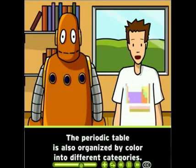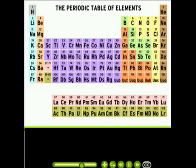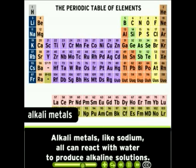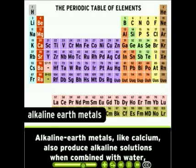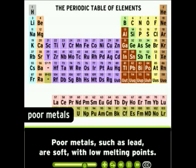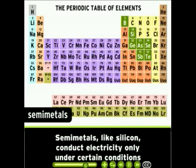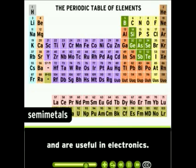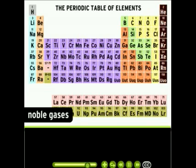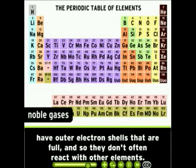The periodic table is also organized by color into different categories based on properties of the elements. Alkali metals, like sodium, can react with water to produce alkaline solutions. Alkaline earth metals, like calcium, also produce alkaline solutions when combined with water and are found all over the place on Earth. Transition metals, like iron, are strong and shiny. Poor metals, such as lead, are soft with low melting points. Semi-metals, like silicon, conduct electricity only under certain conditions and are useful in electronics. Non-metals have a variety of properties and include the carbon, nitrogen, and oxygen vital to life on Earth. Noble gases, like helium and neon, have outer electron shells that are full and so they don't often react with other elements.